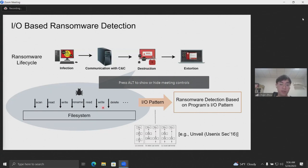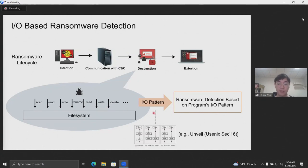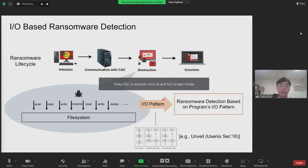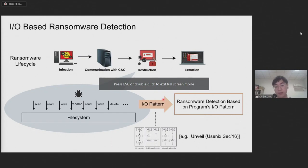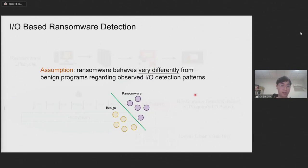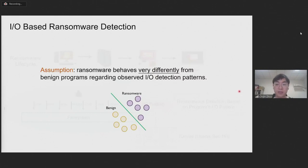A common detection method is to examine if the IO behaviors of each running program match a malicious IO pattern. Detection developers often observe runtime behaviors of some ransomware samples so they can conclude some malicious IO patterns and apply these patterns to their detectors. Their basic assumption is that ransomware behaves very differently from benign programs regarding their IO patterns, so they can easily design a classifier to distinguish ransomware's behavior.